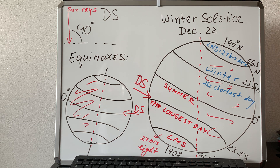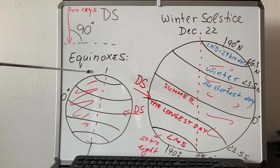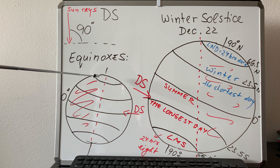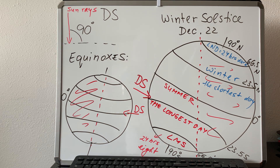On that day, all places on the planet will have 12 hours of daylight and 12 hours of night. When you draw an equinox, you have to shade the part not facing the sun — the opposite side. Remember the rules: direct sun is on the equator, and all places on the planet will have equal day and night.